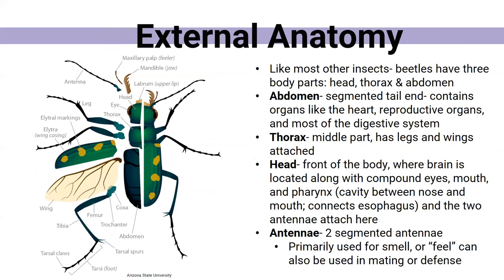When you look at a beetle, what body parts are you looking at? I thought this was important because we'll be mentioning these things a lot. Like many other insects, beetles have three major body parts: the head, the thorax, and the abdomen. The abdomen is the segmented tail end of the animal — it contains their organs like their heart, reproductive organs, and most of their digestive system. The thorax is the middle section where the legs and wings attach. The head, at the front, has the brain, compound eyes, the mouth, the pharynx, and the two antennae also attach here.